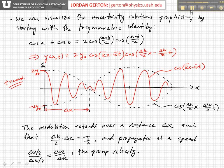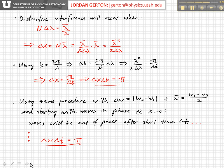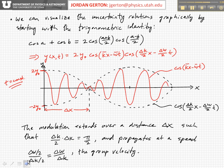We can visualize this situation, the wave packet that we just discussed on the previous view graph, and these uncertainty relations by using the trigonometric identity that cosine a plus cosine b is equal to two cosine (a plus b over two) times cosine (a minus b over two). And so if we use that to express our superposition wave, then we get this, and we see it's the product of two cosines now.